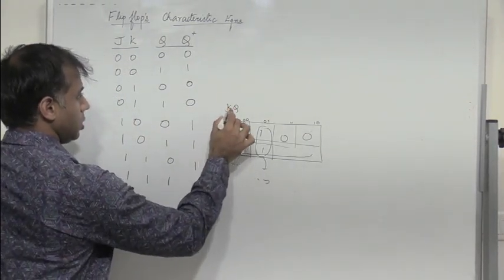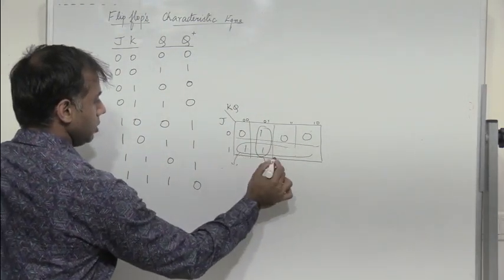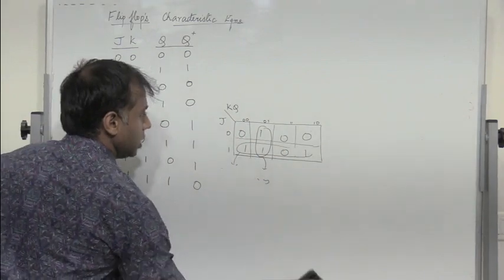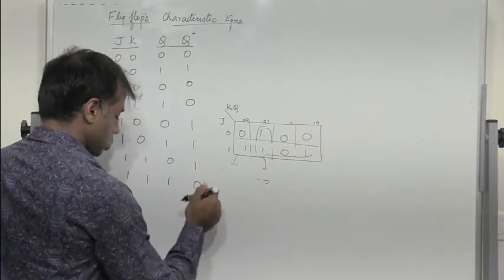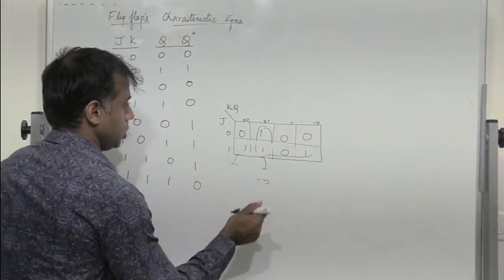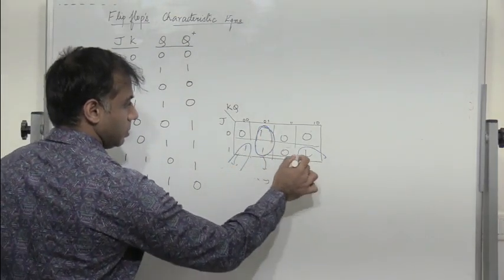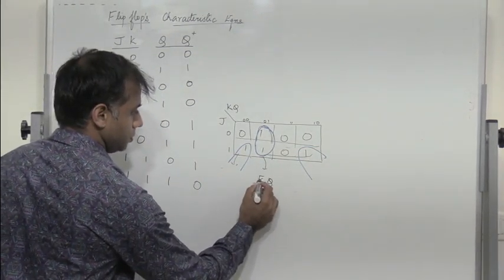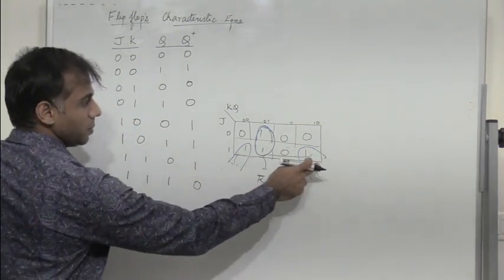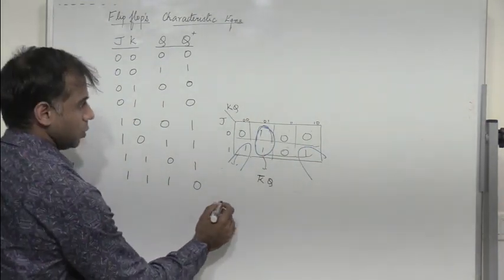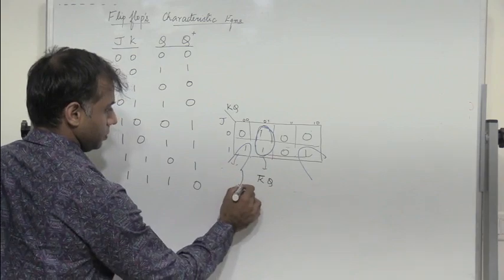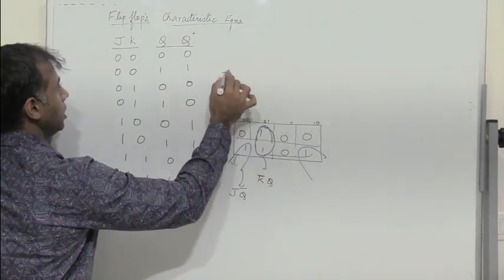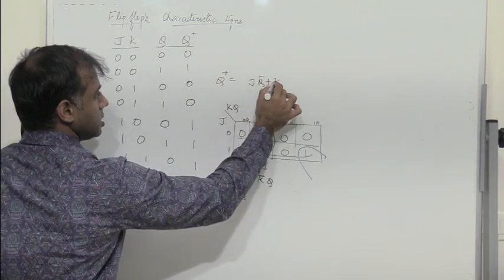So let's find the characteristic equation of the JK flip-flop. We have three variables J, K, and Q. The K-map output values are: 0, 1, 0, 0, 0, 1, 1, 1, 1, 0. These two ones can be combined (shown in blue) giving K̄Q, and these other two ones can be combined giving JQ̄ — since J=1 and K gets eliminated. So the characteristic equation for the JK flip-flop is Q+ = JQ̄ + K̄Q.